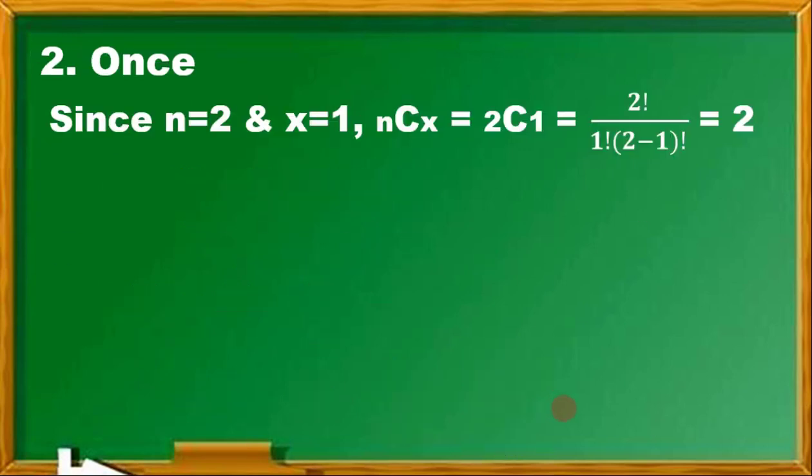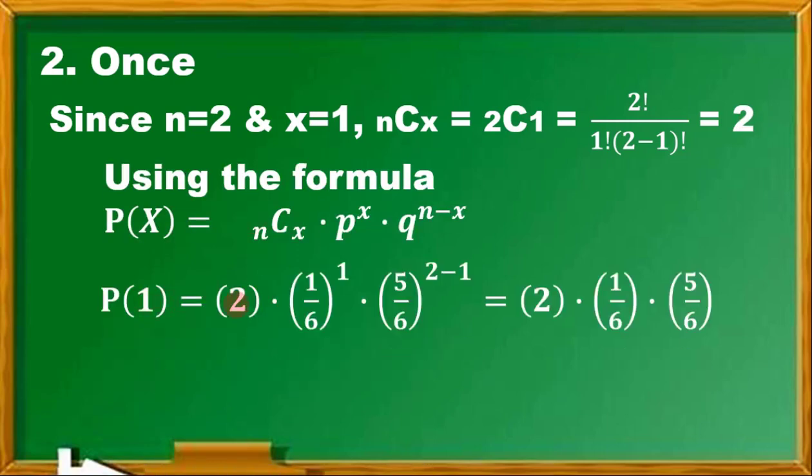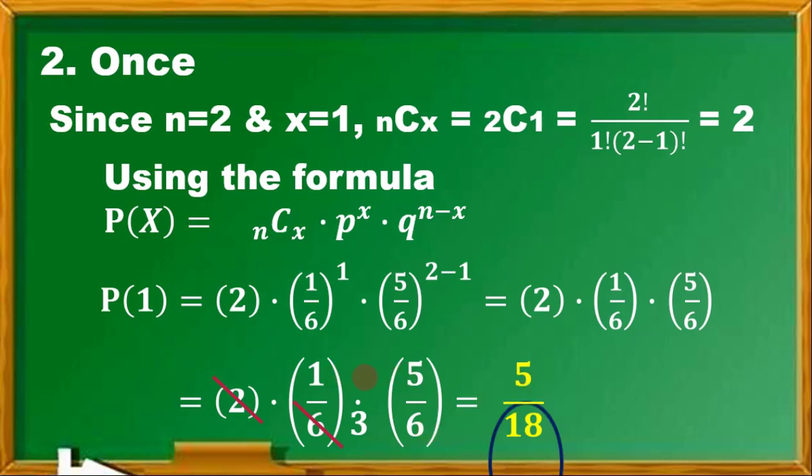For P(1), we have 2C1—verify that, it's going to be 2. Using the formula, P(1), we just plug in the values: 2 times 1/6 for P raised to 1, which is X, times Q which is 5/6, raised to N minus X or 2 minus 1. Simplifying, we have 2 times 1/6 times 5/6. This is 2 times 1—it's 2. So 2/6 can be reduced as 1/3, times 5/6. So we have 5 over 18. This is the final answer.